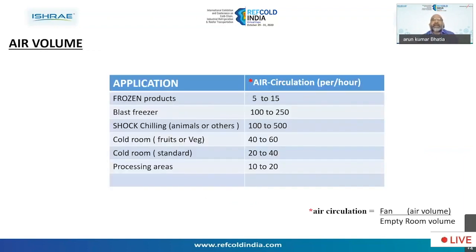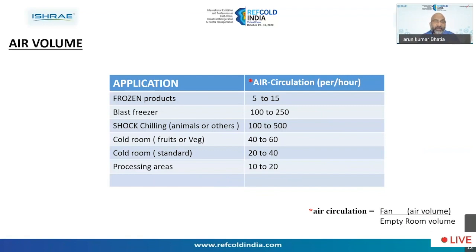This is the air volume that the industry recommends — the optimum volumes of air inside any chamber. For example, if we are storing frozen products inside a chamber, the air circulation volume will be different. If you are blast freezing the product, air volume should be higher. If you are shock chilling — for meat, or pre-cooling of fruits and vegetables — there are different air volumes for different applications and chamber sizes.